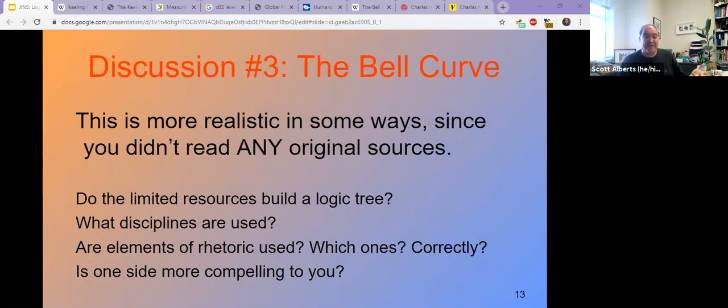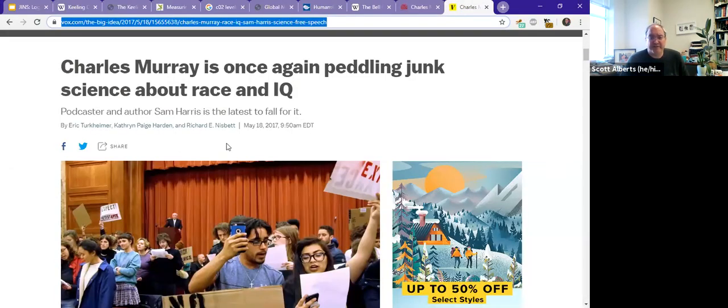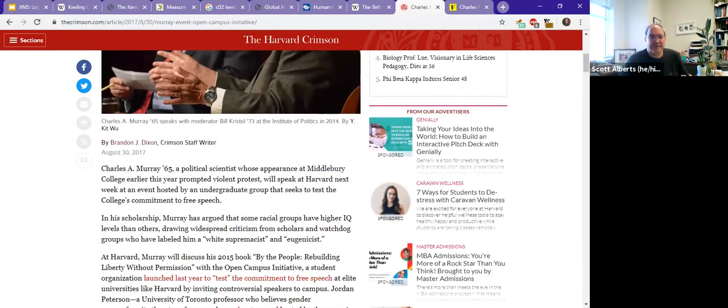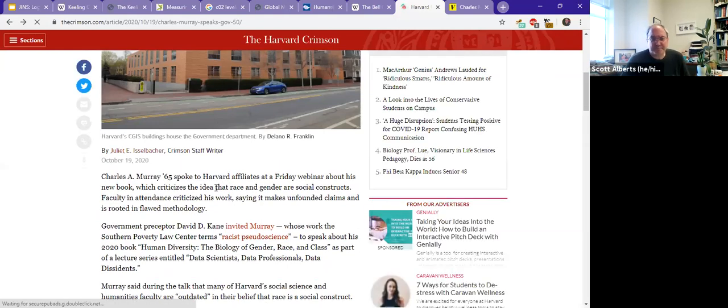Now, did the authors seem to make a logic tree that works? Want to know what disciplines they're using? Were they using the elements correctly? And again, this would be both the original article as well as any responses to it. Charles Murray is the person's name. And how compelling is it? And again, there's a Vox article that I link to that I ask you to read. This is from 2017. But Charles Murray is still writing. He has a new book out summer of 2020. And he did a webinar in October 2020. And he did a webinar at Harvard. And the Harvard Crimson, which is the newspaper there, has an article about how they think the work is flawed.